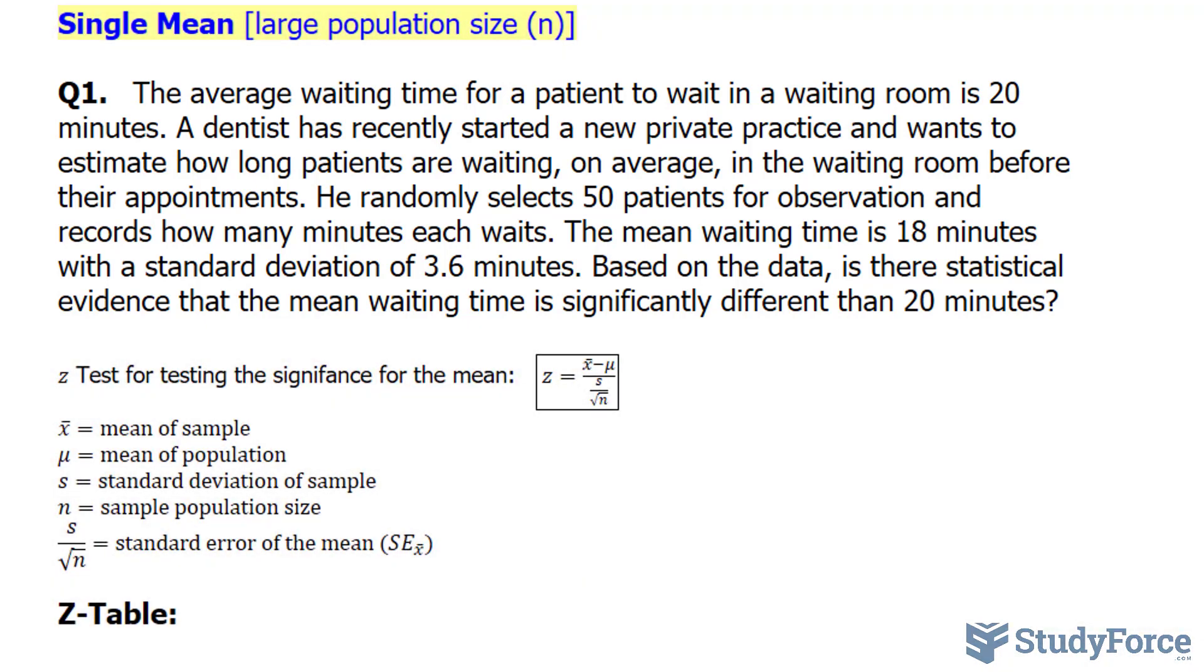There's a lot of information here that needs to be sorted out. The first thing that I want to do is write down all the information that's provided. First of all, we are given 20 minutes as the average waiting time. That's the average waiting time, generally speaking, for the population. So, to denote that, we use the symbol μ, which looks like a U, but it's a Greek letter, is equal to 20 minutes.